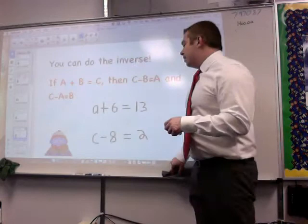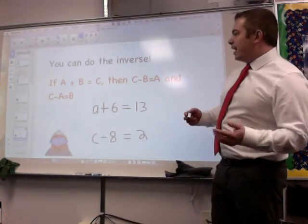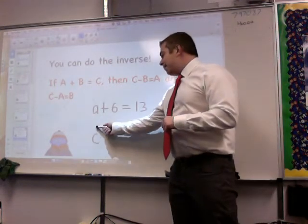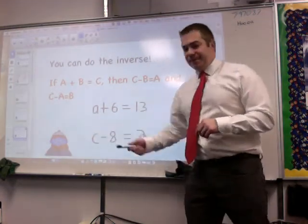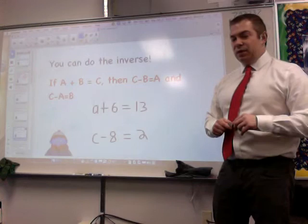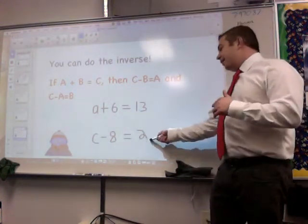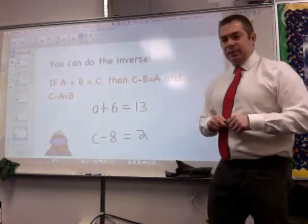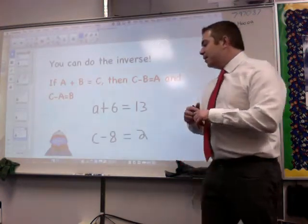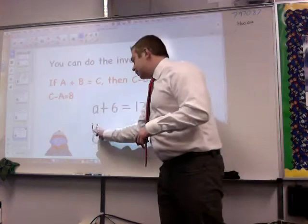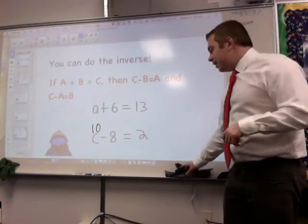Now down here I have c minus 8 equals 2. So kind of the same thing as before. If a minus b equals c, then c plus b equals a. I might be confusing with all these letters, but I could say that minus that equals that, then that plus that equals that. You're just doing the inverse. So 2 plus 8 equals 10, so c must be 10. But let's check it. Is 10 minus 8 equal to 2? You bet it is. So you do the inverse here.